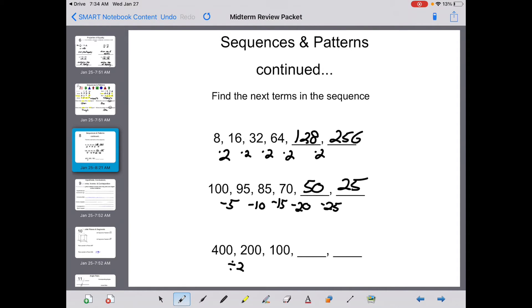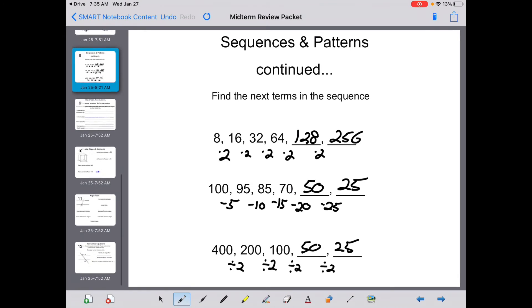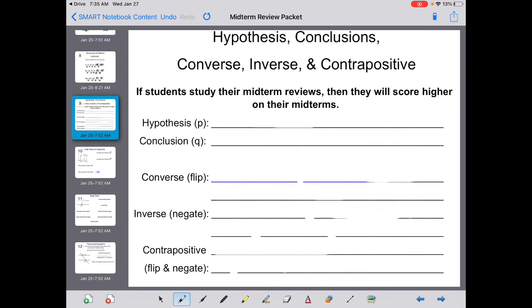Here you have 400 divided by 2 is 200. 200 divided by 2 is 100. 100 divided by 2 is 50. And 50 divided by 2 is 25.